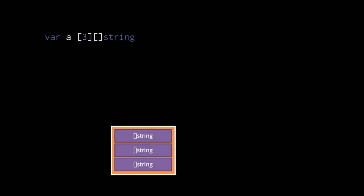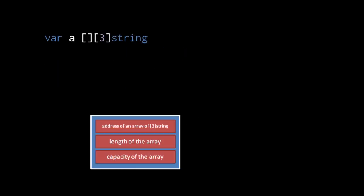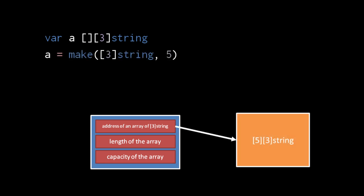Like with any other type in the language, we can create arrays of slices. Here we have an array of three slices of strings. The slices all start out as zero slices, so we assign them each a non-zero slice created with make. After these assignments, the first slice references an array of five strings, the second references an array of 80 strings, and the third references an array of 30 strings. Just like we can create an array of any type, we can create slices of any type including slices of arrays. Here we have a slice of arrays of three strings, and when we use make to create it with a capacity of five, the underlying array is an array of five arrays of three strings.